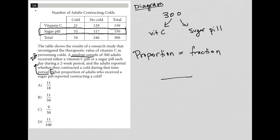Well, 33 of the adults who received a sugar pill contracted a cold. So 33 out of the 150 people or adults who received a sugar pill reported contracting a cold. So we obviously do not see 33 out of 150 as an answer choice, but that's because we can simplify this.